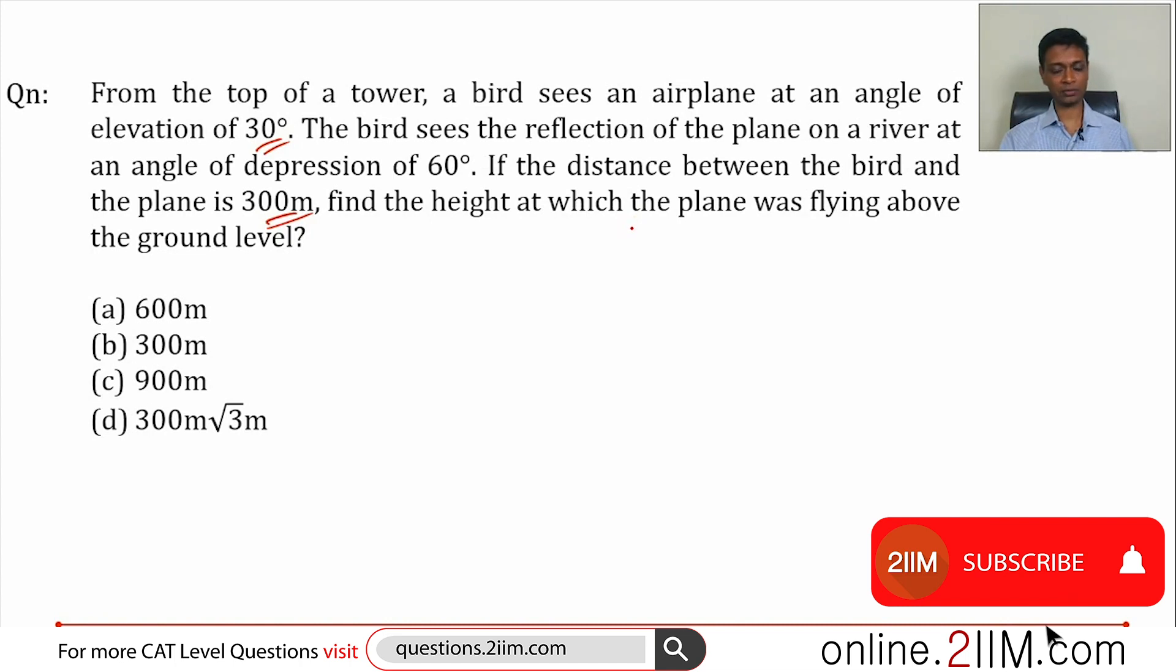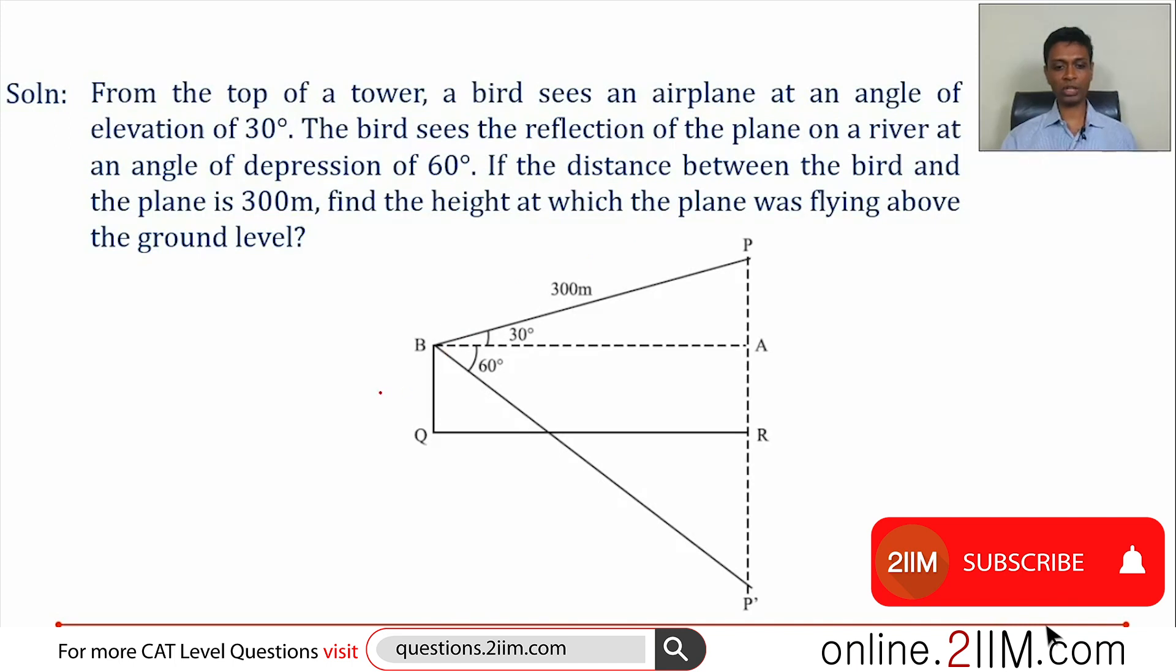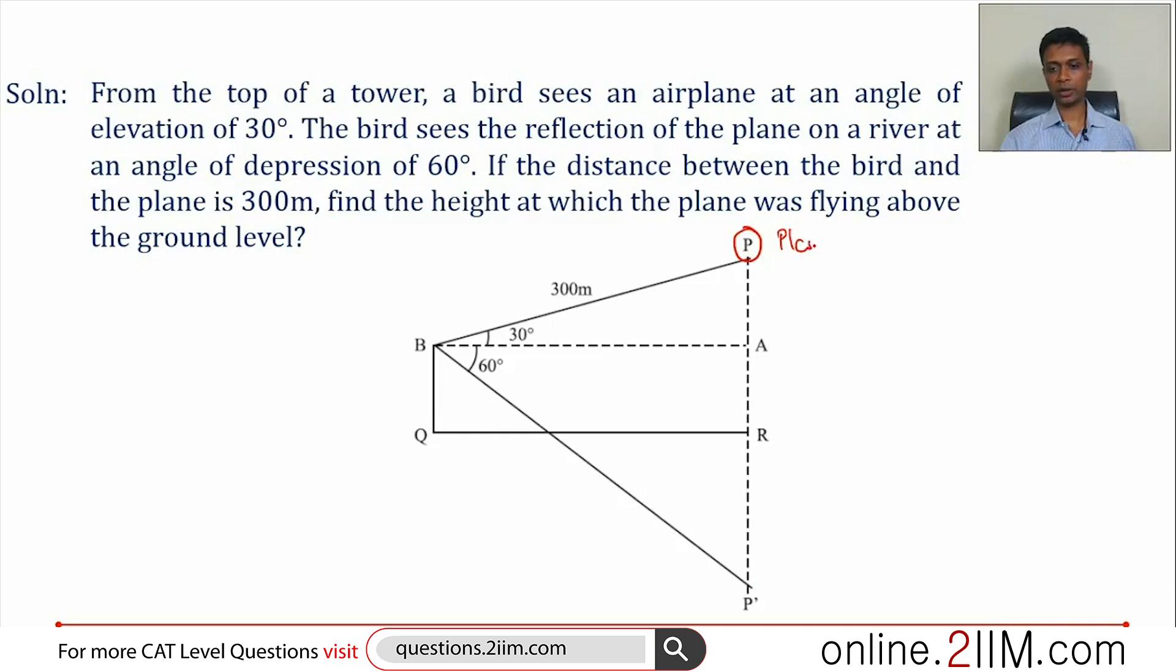Almost all of these heights and distances questions, it's important to get the diagram right. So this is tower BQ. The bird is sitting here. At a 30 degree angle of elevation it finds the plane. Then this is the river. At a 60 degree angle of depression it finds the reflection. P is the plane, P' is the reflection.